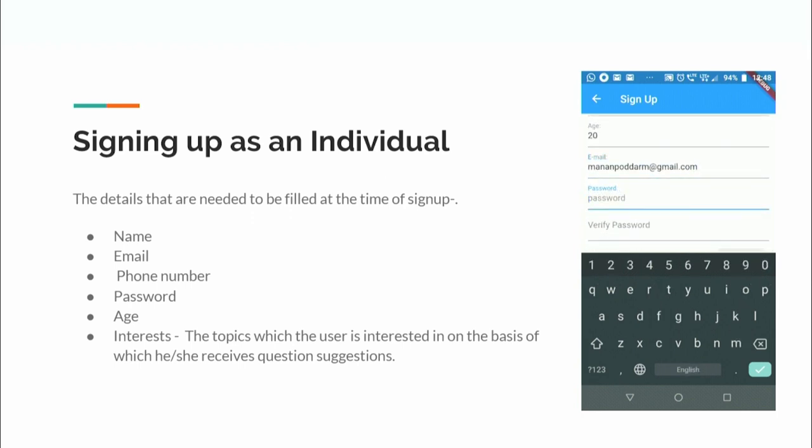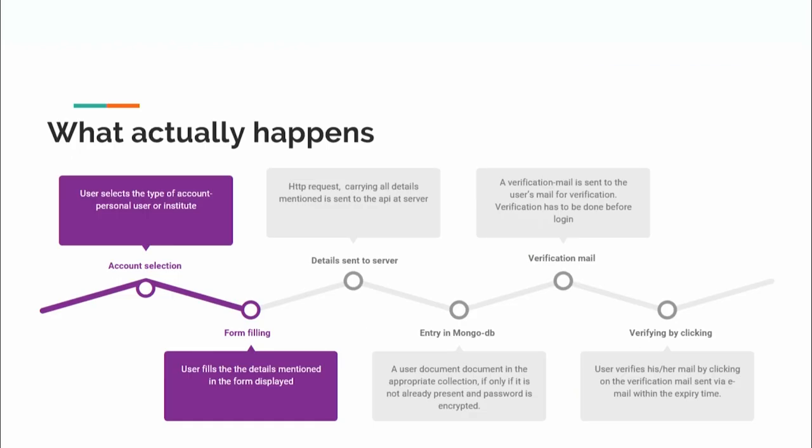Questions matching the user's interest appear in the 'Questions for Me' section. The signup flow starts with account type selection — a dialog box lets the user choose between personal user or institute. After form filling, the details are sent to the server, stored in MongoDB, and a verification email is generated and sent to the user.